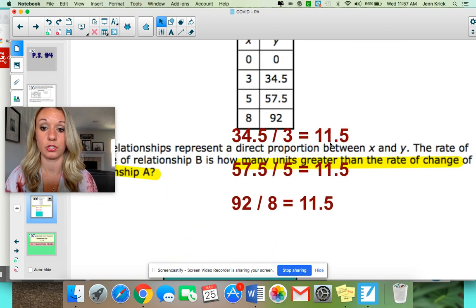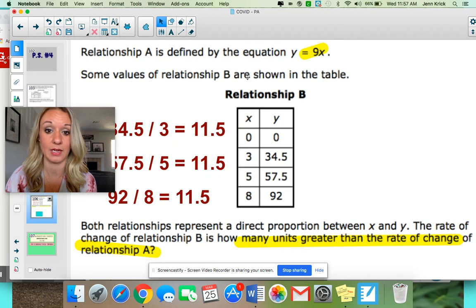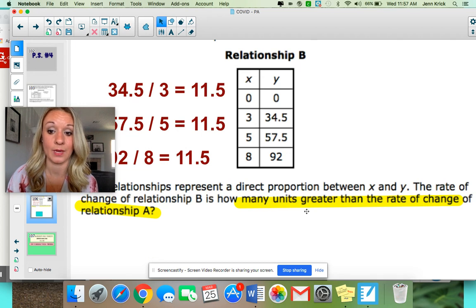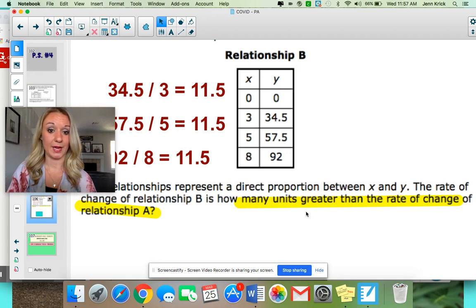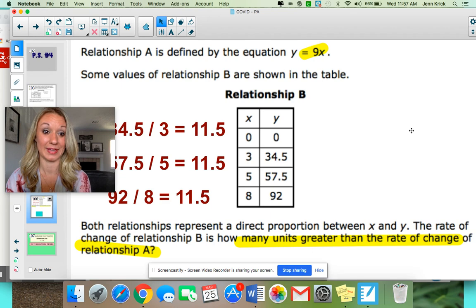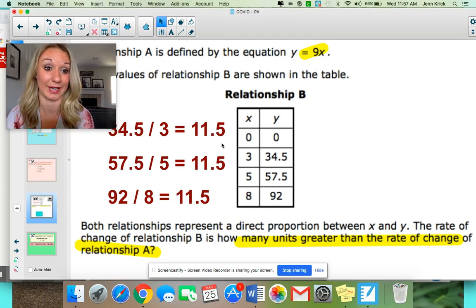So now you are asked to compare. You've got 9 and you've got 11.5. Those are the two constant rates of change that you're comparing. It says how many units greater is the constant rate of change for B compared to A? What is 11.5 minus 9? It is 2.5. So it is 2.5 units greater. So a lot of us overthought that. You were doing division, multiplication. No, you just had to subtract. That's it.